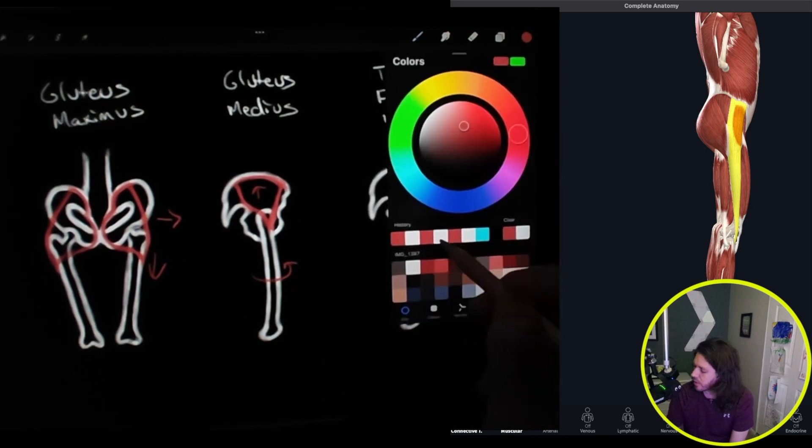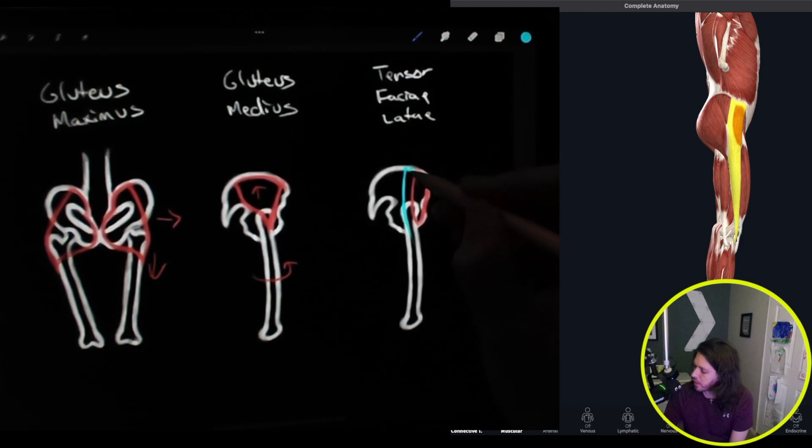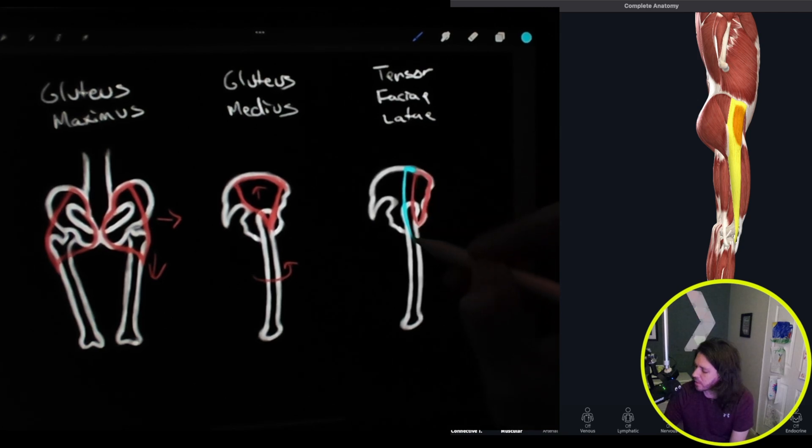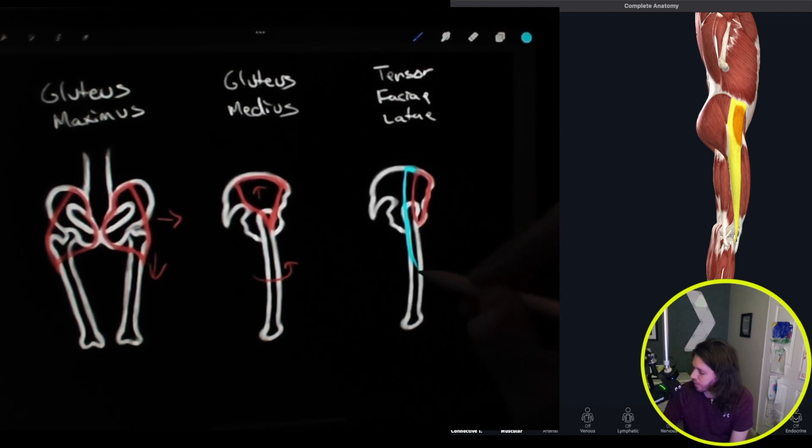And then I'll change colors here and do the IT band, which does cover the femur. It doesn't attach to it. It attaches, the point of origin is right here at the ilium. Same with the other ones. And it goes right down, goes right around about halfway down the femur.